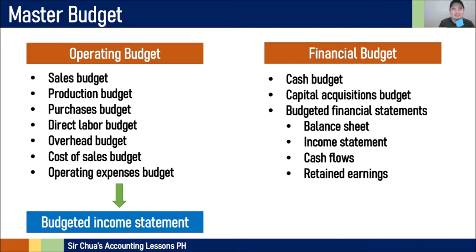Regarding where the budgeted income statement belongs: some textbooks place it under the operating budget because it is the endpoint of production; others place it under the financial budget because it is a pro forma financial statement. The budgeted income statement is actually both an operating budget and a financial budget component — it relates to operations but also affects the cash budget. The most important thing is that you prepare it correctly.